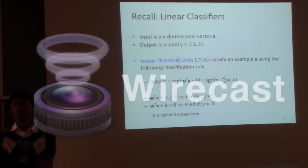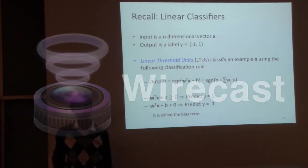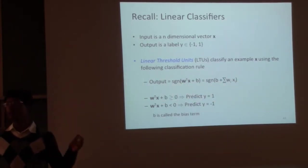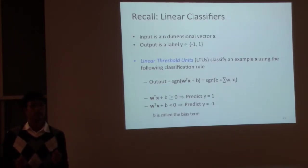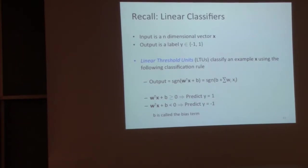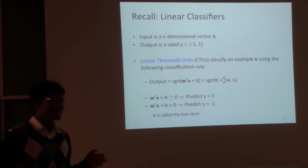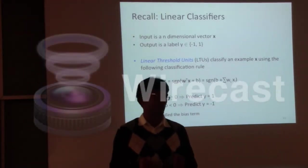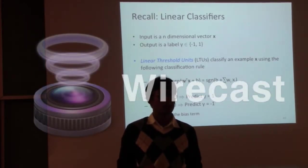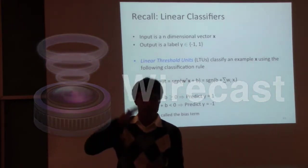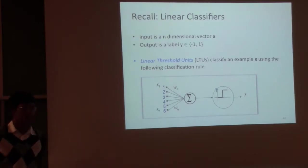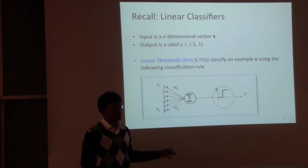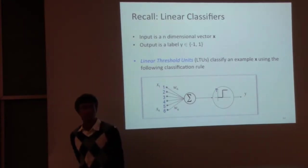The bias term v can be folded into w by having a constant feature that's always one, and you still take a dot product. I'll be switching between these two notations. The key point is that for binary classification, a bias term is very important — even if I don't have it in my slide, you should always have a bias term. Otherwise you are only considering functions that go through the origin, lines that go through the origin.